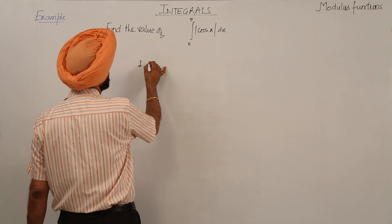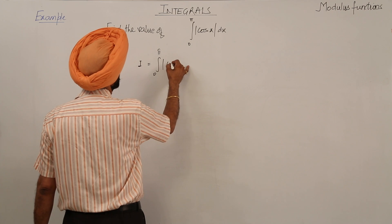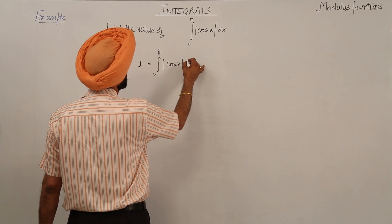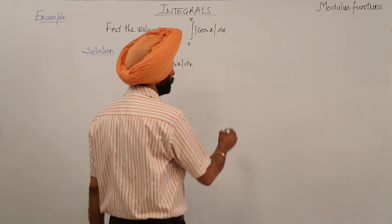This question is to find the integral from 0 to pi of the modulus of cosx dx. Now the limits are from 0 to pi.